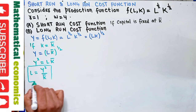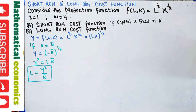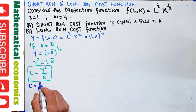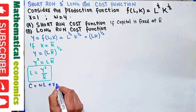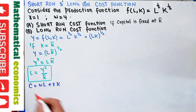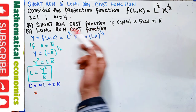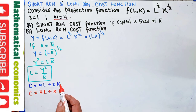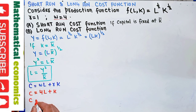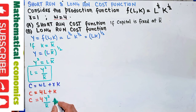The total cost function of any firm is equal to the wage rate times units of labor employed plus the rental rate times units of capital: C = wL + rK. With w = 4 and r = 1, this becomes C = 4L + K. Since capital is fixed at K̄ and L = y²/K̄, substituting gives C = 4(y²/K̄) + K̄.